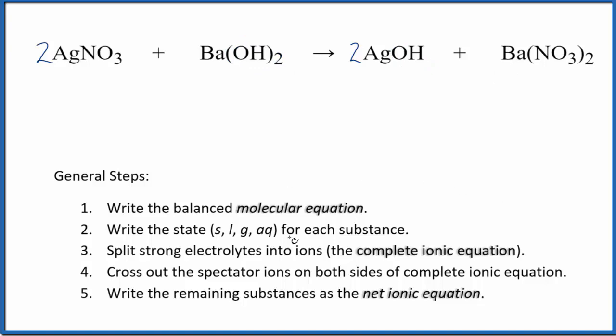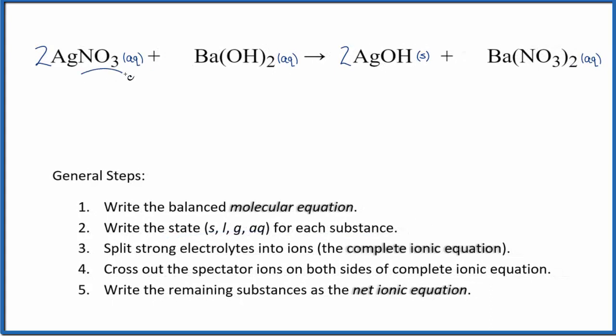Now we can write the state for each substance and that looks like this. Compounds with the nitrate ion are very soluble, so both of those are aqueous. Barium hydroxide is considered a strong base, so we're going to write aqueous for that.